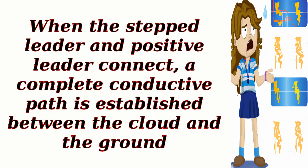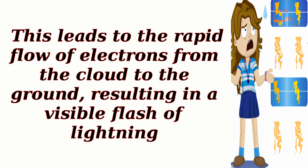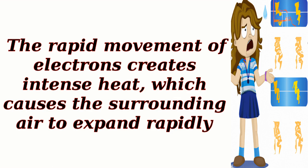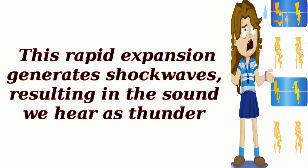When the stepped leader and positive leader connect, a complete conductive path is established between the cloud and the ground. This leads to the rapid flow of electrons from the cloud to the ground, resulting in a visible flash of lightning. The rapid movement of electrons creates intense heat, which causes the surrounding air to expand rapidly, generating shockwaves and resulting in the sound we hear as thunder.